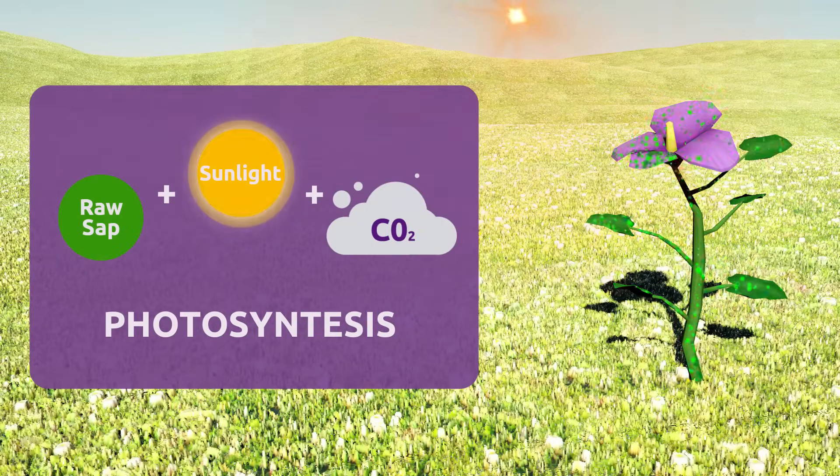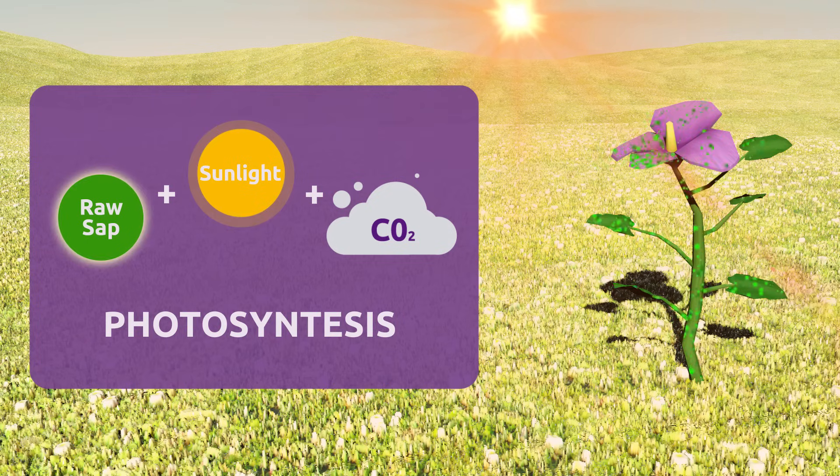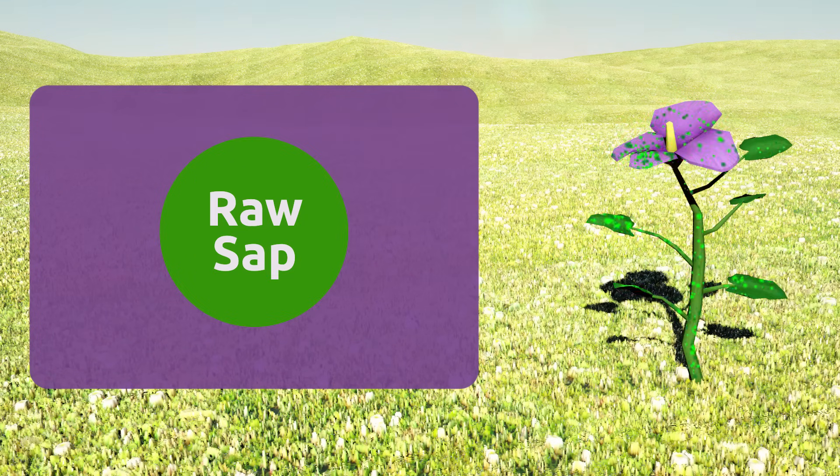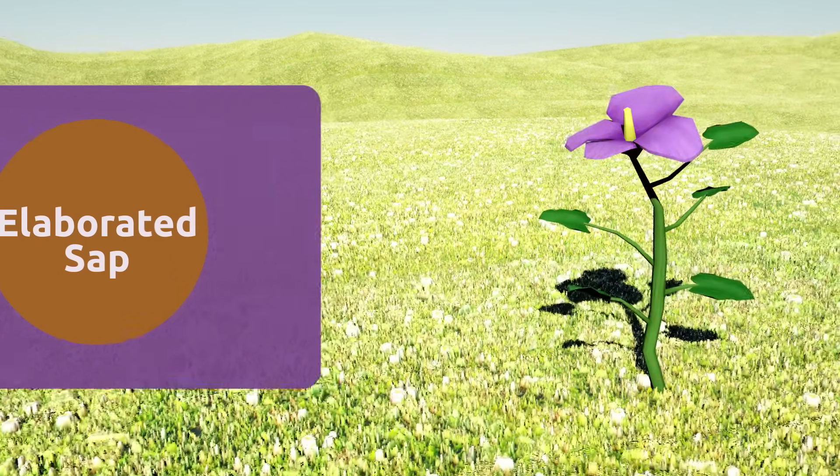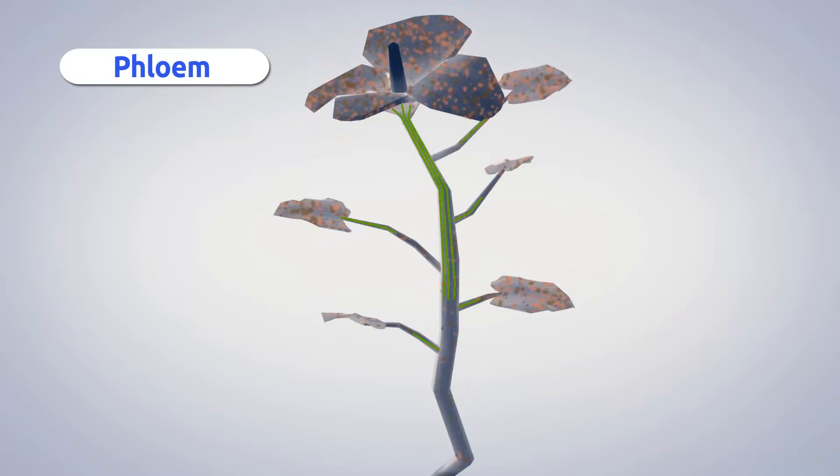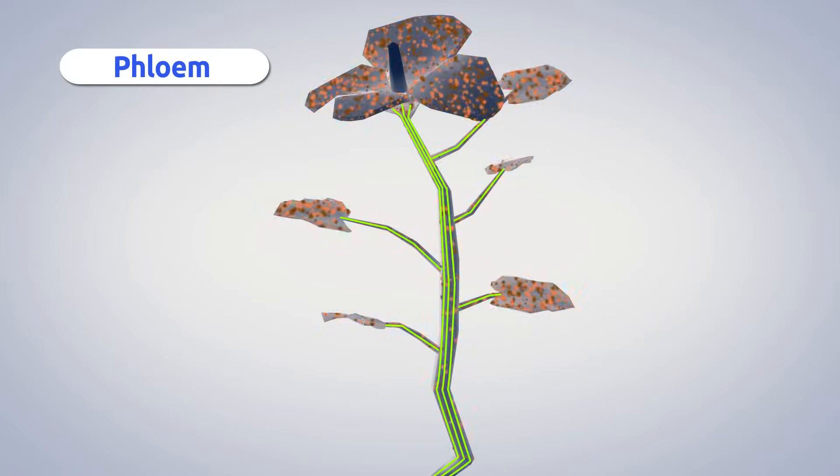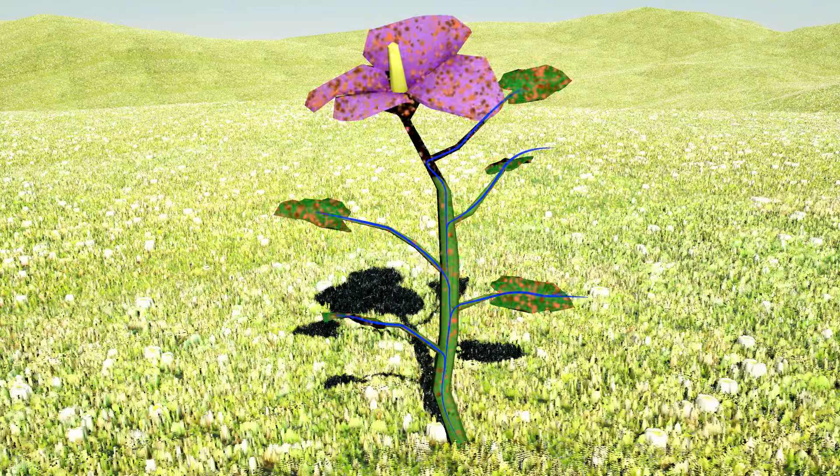Photosynthesis involves sunlight, raw sap, and carbon dioxide. During photosynthesis, raw sap becomes elaborated sap, and living tissues called phloem spread elaborated sap to the rest of the plant. This is when oxygen is released.